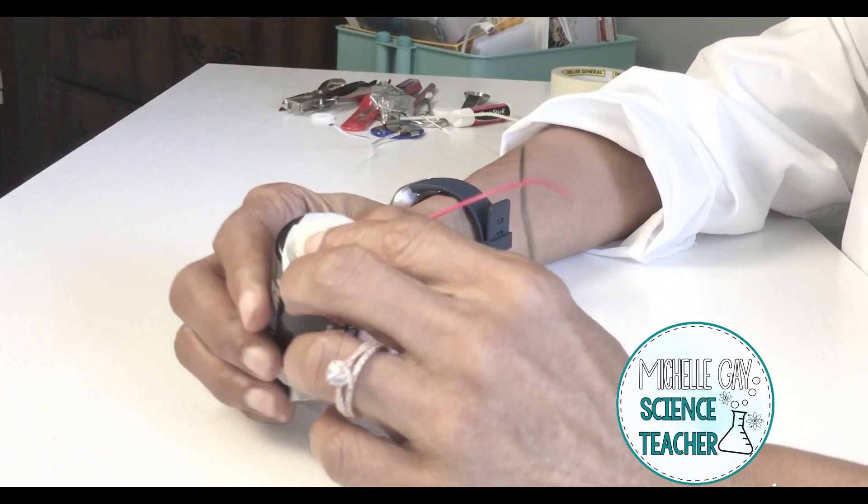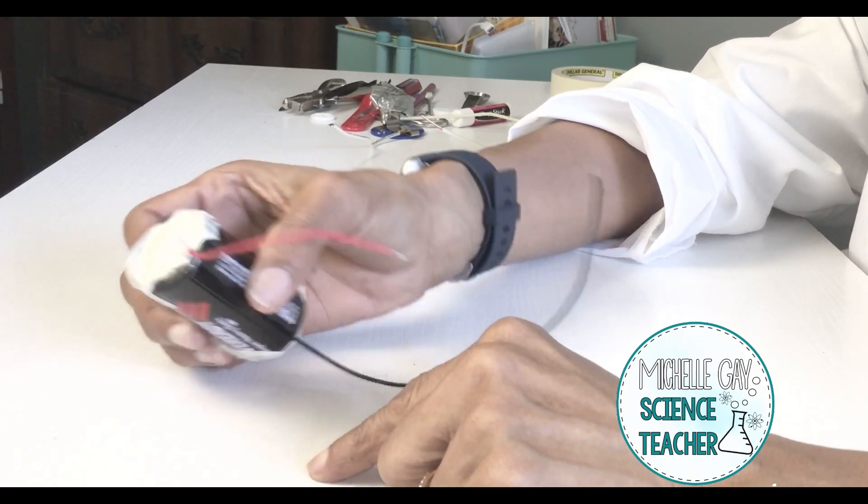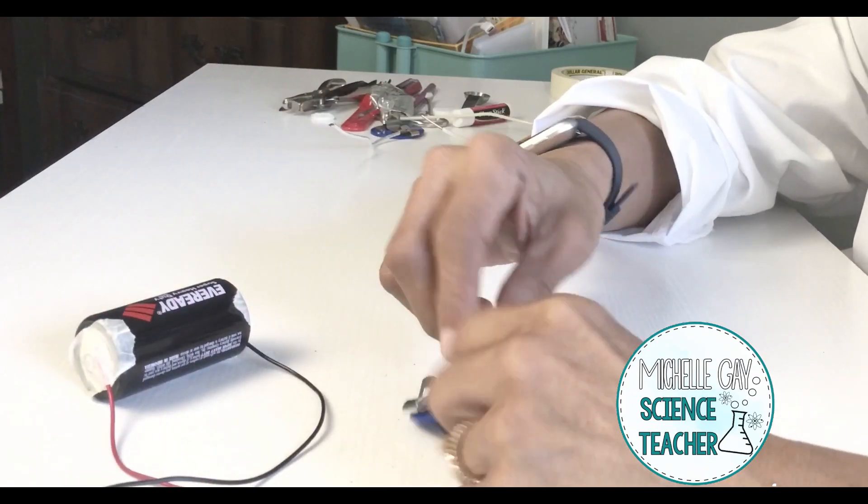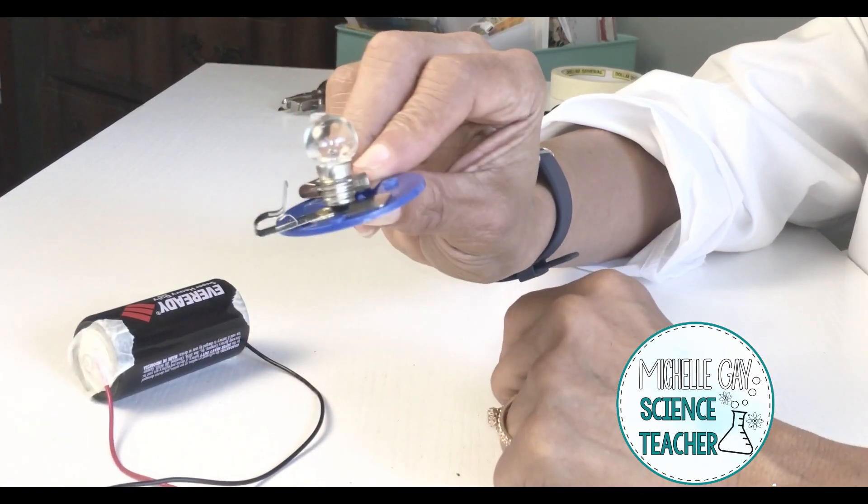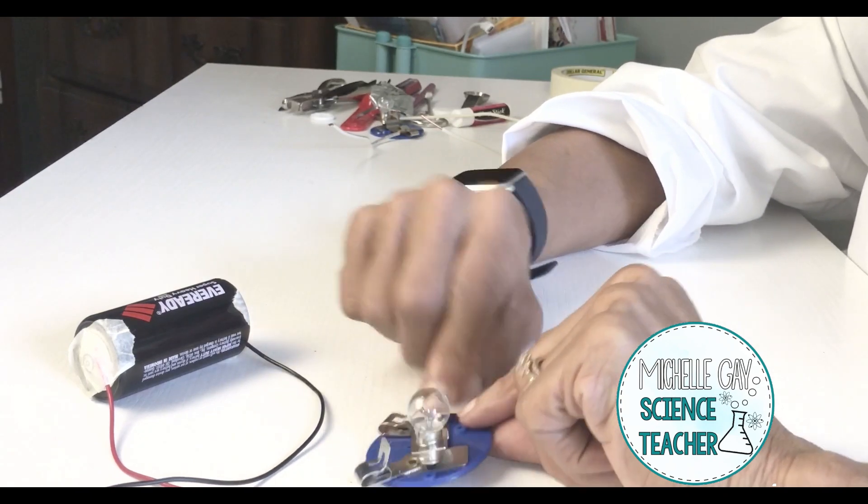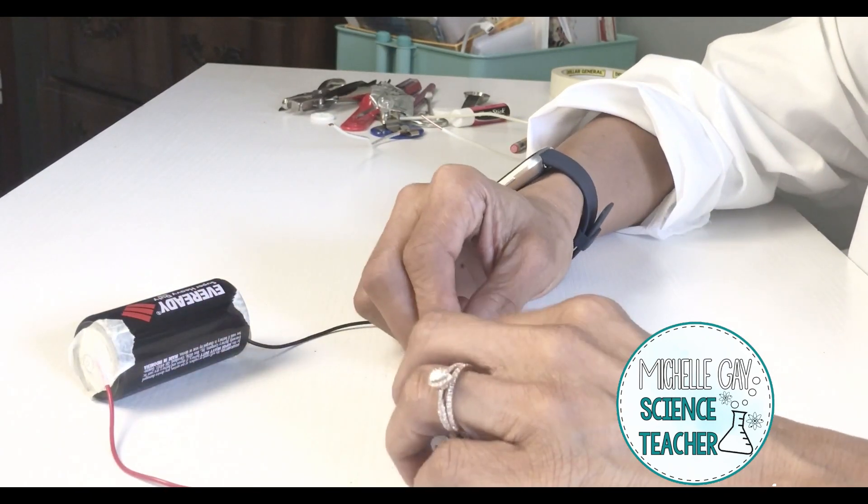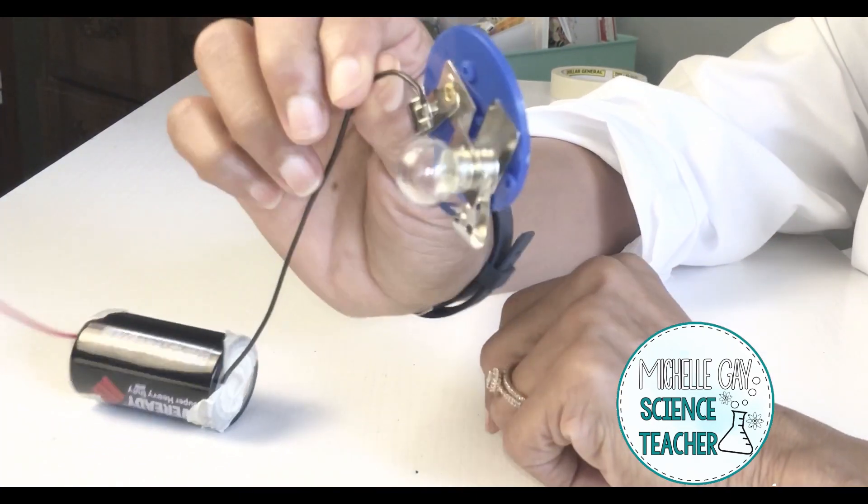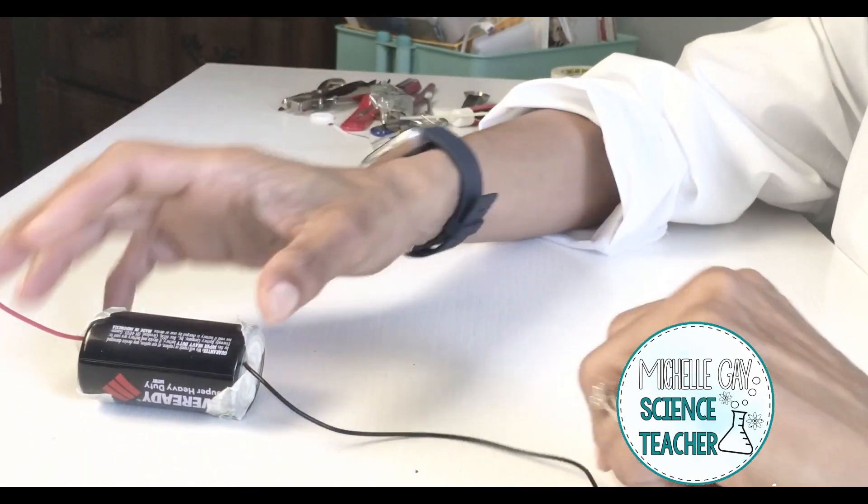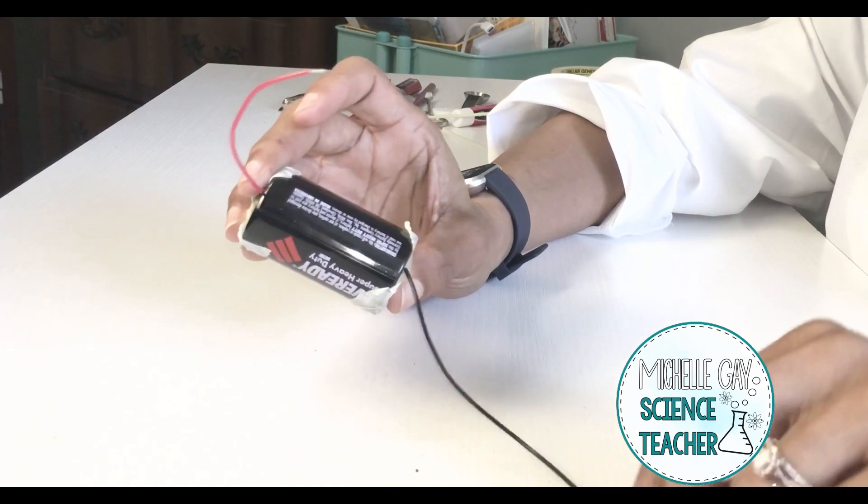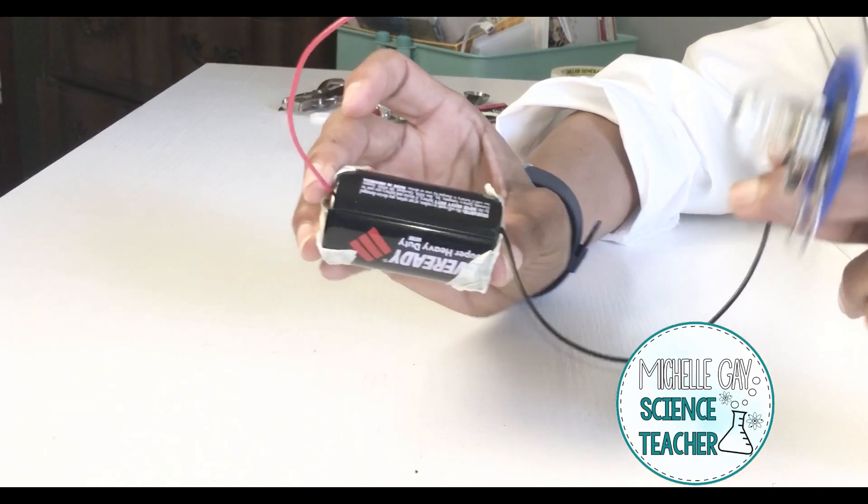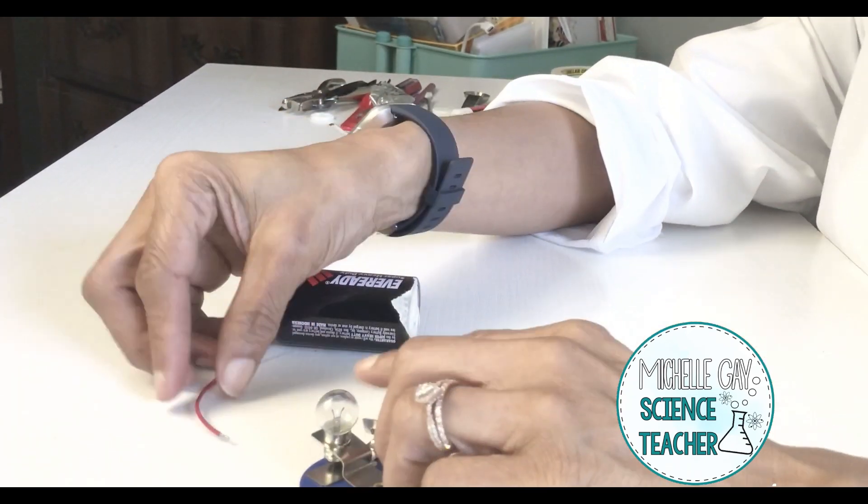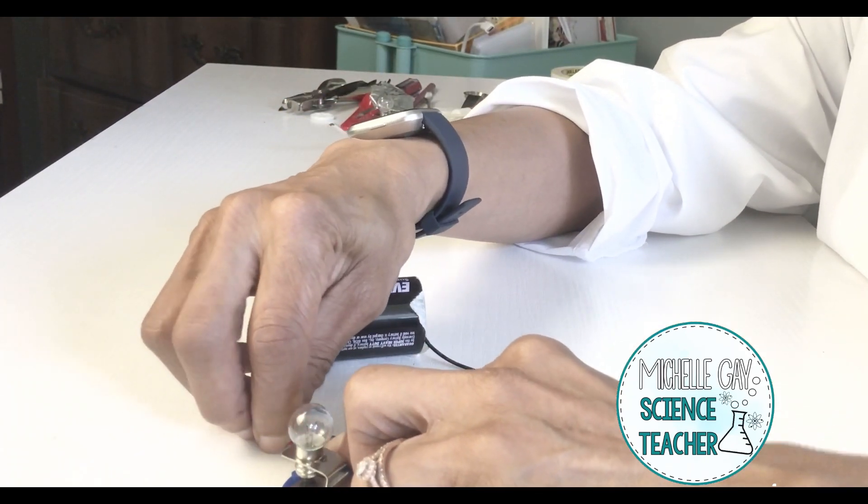So I took my tape and taped the wire to each end of the battery. Then I took my light bulb and placed it into this holder. Now we're going to take the wires and place them in the little clips that I have here. That's one. Now notice this is not a complete circuit because there's a gap in it.